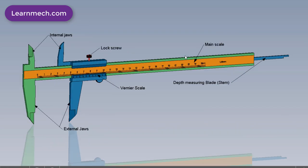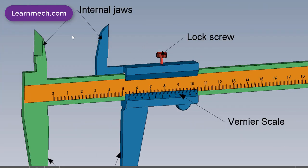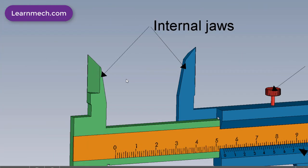Internal jaws are used for internal dimension measurement like washer internal diameter, groove, or slot.